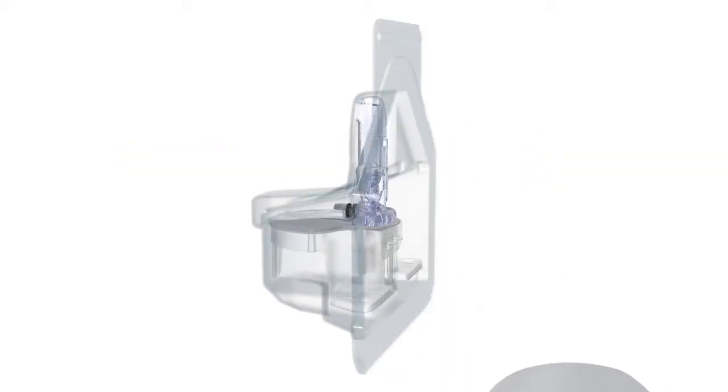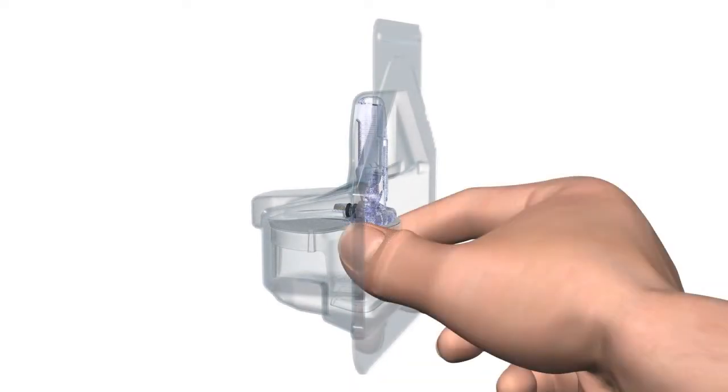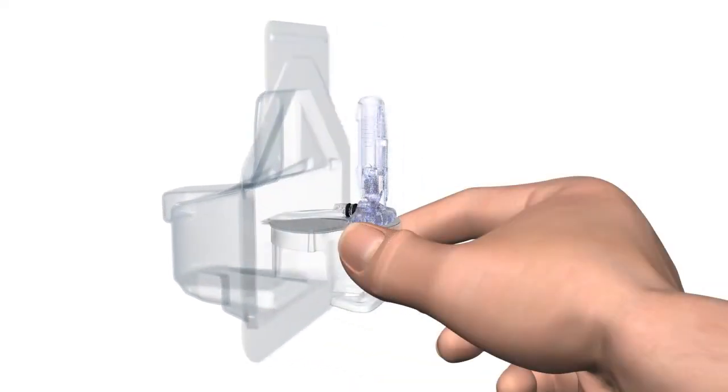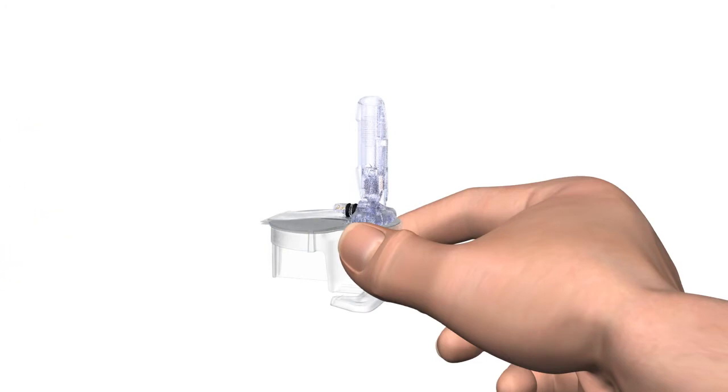Open the Enlight Glucose Sensor Package. Remove the sensor from the package by holding the plastic pedestal. Do not hold it by the sensor or needle housing as this could damage the sensor.